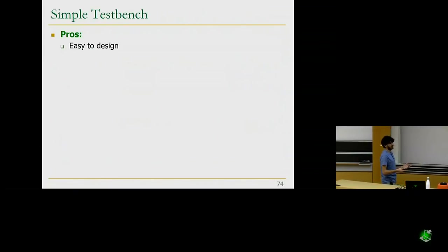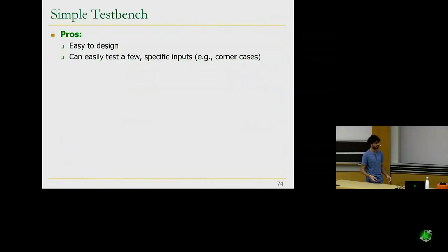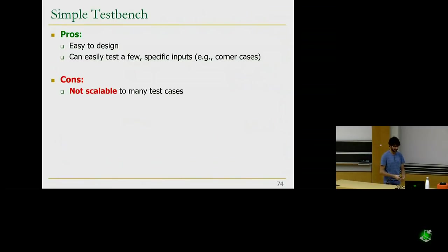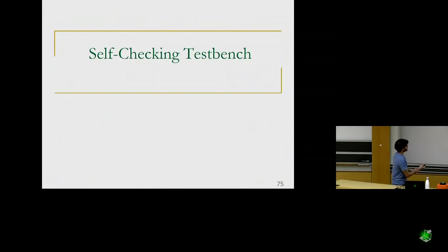The simple test bench is easy to design with very little code, making it great for testing a few important inputs like corner cases quickly. But it's not scalable — you're limited by how many test cases you can write by hand, and outputs must be manually inspected outside of simulation. When testing lots of inputs, checking waveforms becomes very tedious. This motivates moving to a self-checking test bench, which we'll cover after the break.